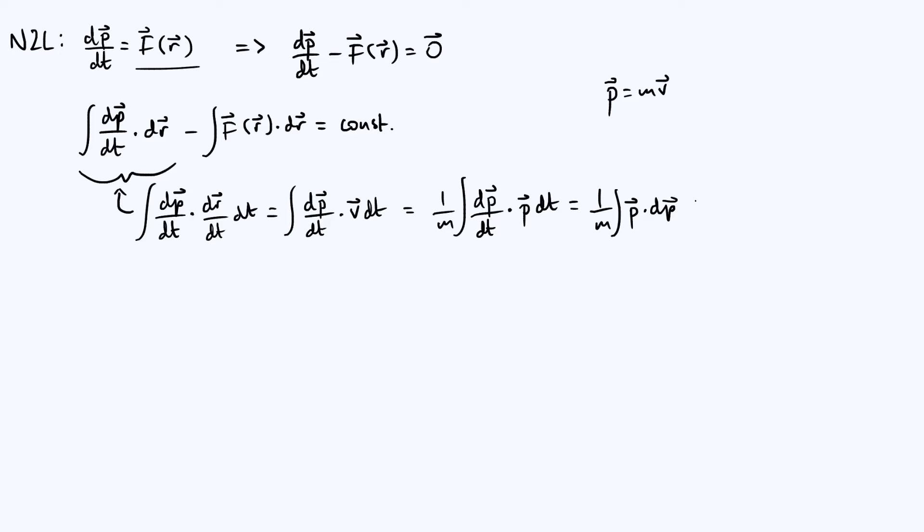What we can do is just expand this dot product into its individual terms. And so you're going to get px dpx, where the x is just the x-component of the momentum, and then you get identical terms for the y and z parts: py dpy and then plus pz dpz.